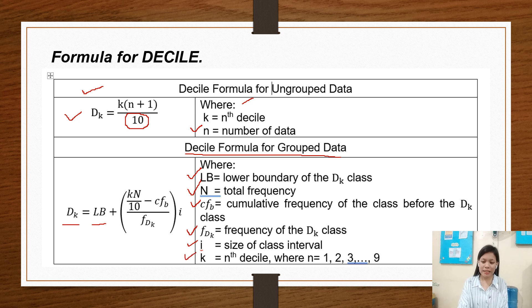K is the 9th decile where K equals 1, 2, 3, 4, 5, 6, 7, 8, 9, depending on what is asked in the problem.